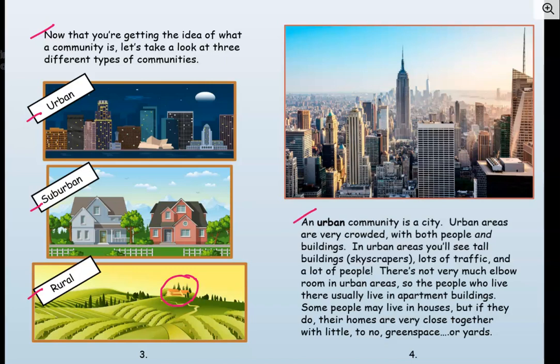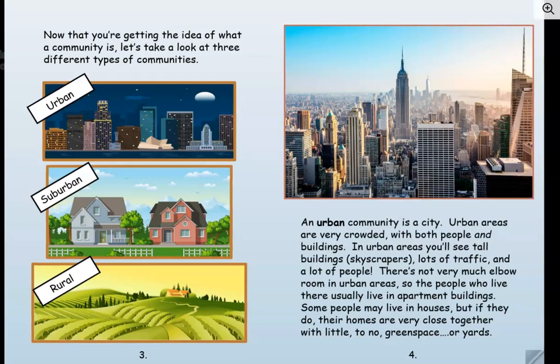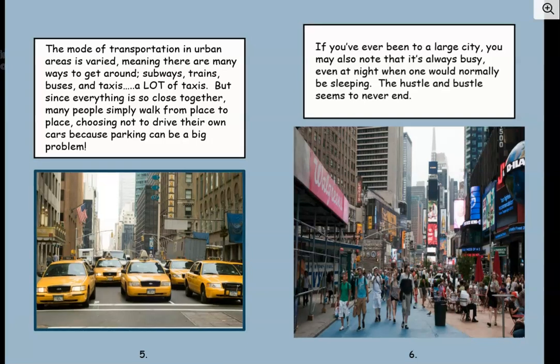An urban community is a city. Urban areas are very crowded with both people and buildings. In urban areas, you'll see tall buildings or skyscrapers, lots of traffic, and a lot of people. There's not very much elbow room in urban areas, so the people who live there usually live in apartment buildings. Some people may live in houses, but their homes are very close together with little to no green space, yards, or gardens. Elbow room — think about sitting at the lunchroom table with people on both sides, super close. You can't move your elbows because it's really crowded. That's what it means.